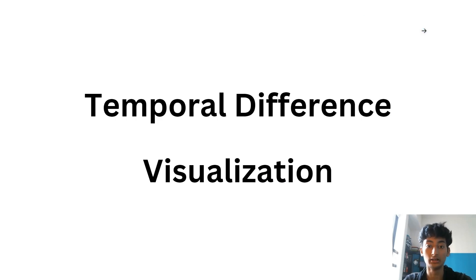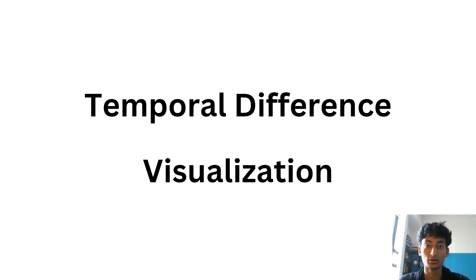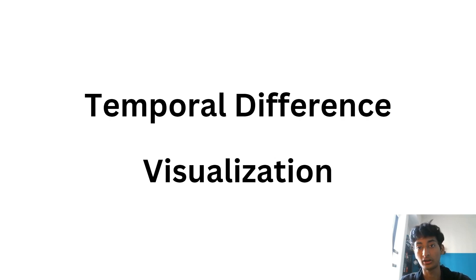Hello and welcome everybody, this is Soham and in today's video we'll cover the topic of temporal difference learning, also called TD for short. In reinforcement learning you have algorithms like TD zero and TD lambda, but today we'll stick to TD zero and try to understand what exactly temporal difference is, how it is a subset of Q learning, and why people say that TD exploits the Markovian property.